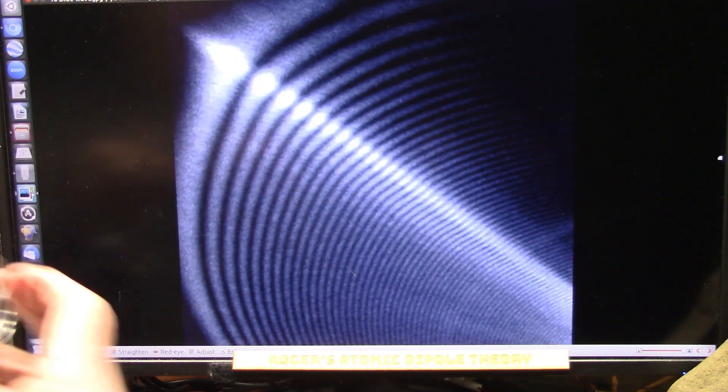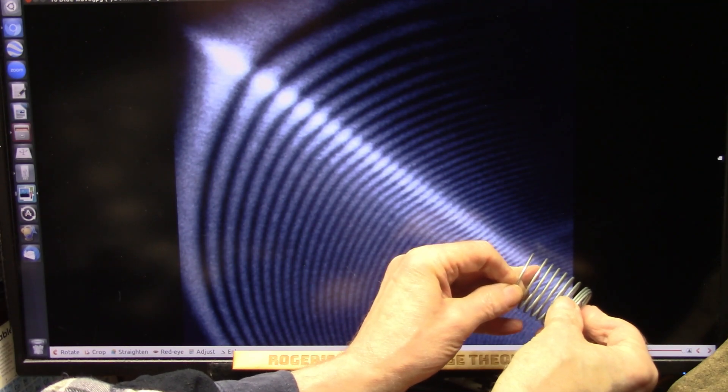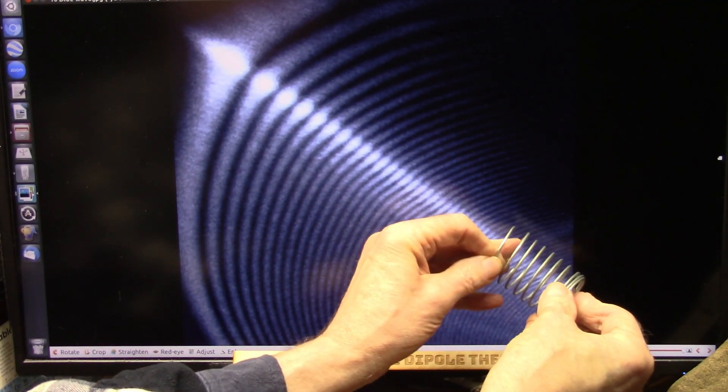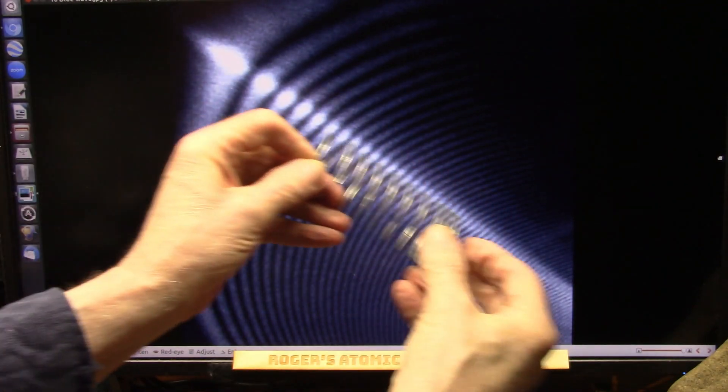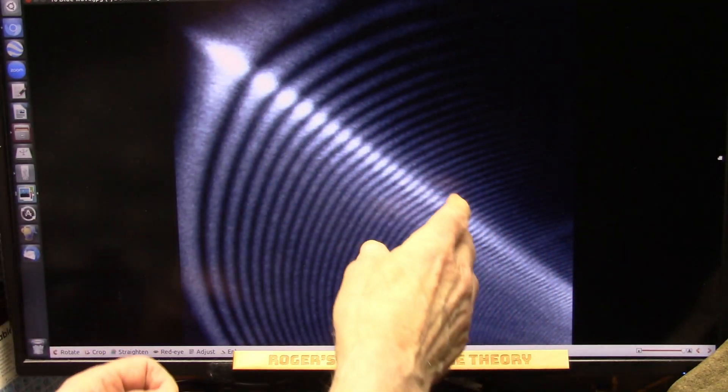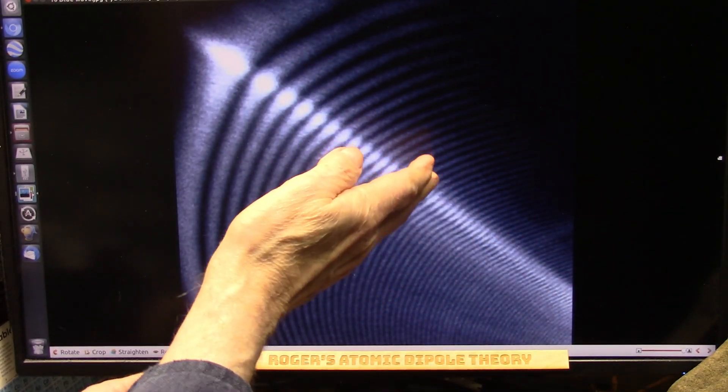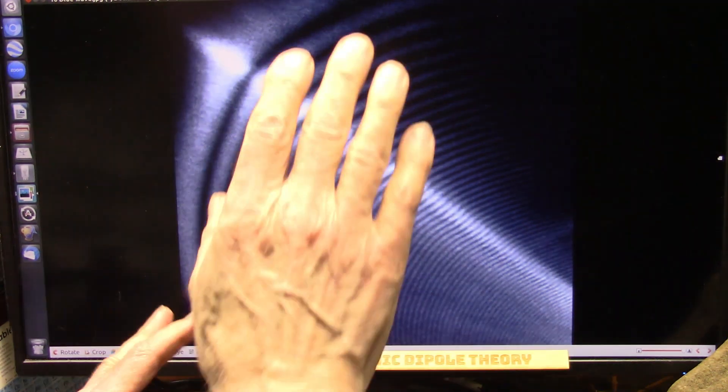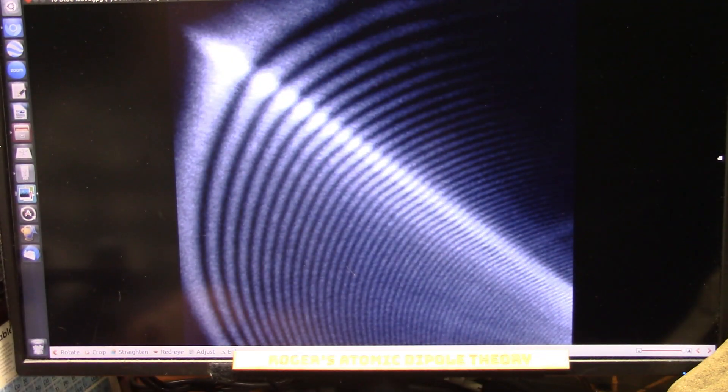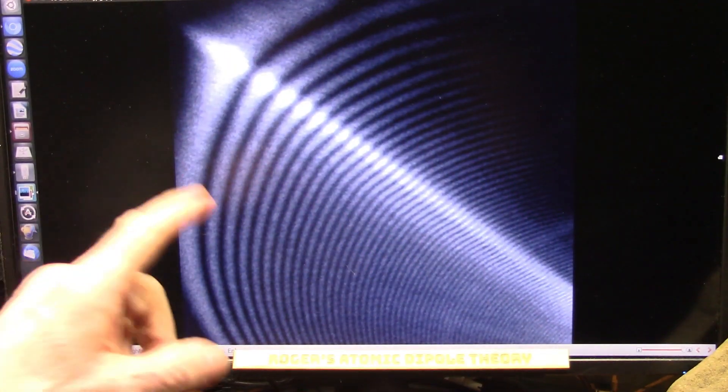And why is it going? Because all of the stuff in front of it is keeping it, it's slowing down. That's the nature of resistance. Because this is a particle, and I've shown this very, very clearly.